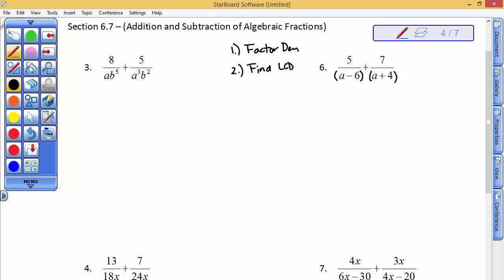So, in this problem, because neither of those match, then they both have to be in the LCD, which would be a minus 6 times a plus 4. So, your next step is to write an equivalent fraction so that you have these two binomials in your denominators.